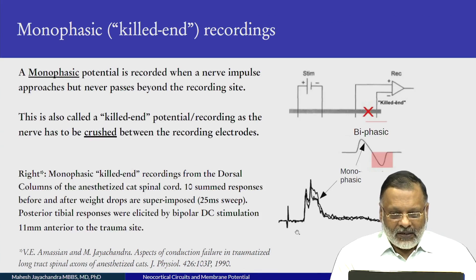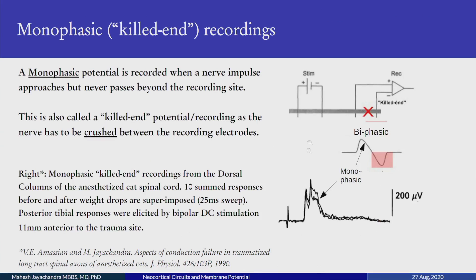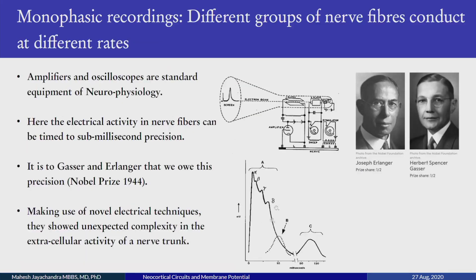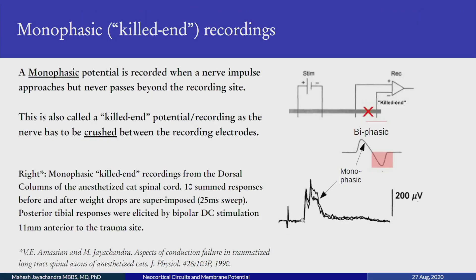What is the monophasic Kilden recording? This is a potential recorded when a nerve impulse approaches but never passes beyond the recording site. Here you have a stimulus, the nerve, and the recording site. In a normal biphasic recording, the electrical activity goes up and then down in the opposite direction. But if you crush the nerve in between — which is why you get the name Kilden recording — you only get half of it, a monophasic response. On the right are monophasic responses from a cat dorsal column of the spinal cord, from my thesis, where I was looking at the activity of sensory columns in response to trauma. This is still an important technique which can be used experimentally.